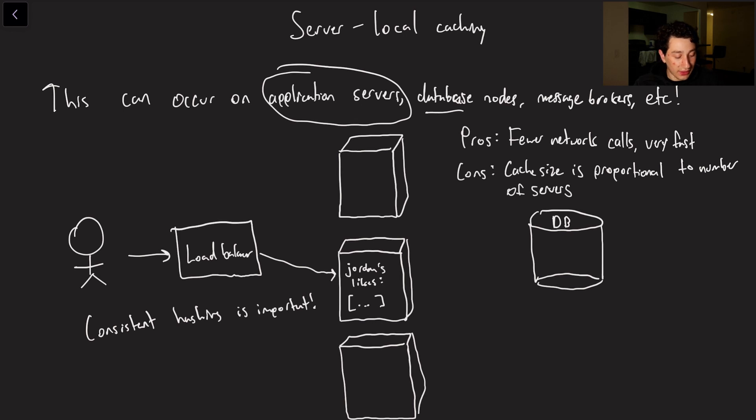And when I say application server that could mean many different types of things. It could be a database like this guy over here. It could be a message broker if you're reading the same message over and over and over again for example in Kafka. It could also be on your application servers or zookeeper your coordination service anything like that.